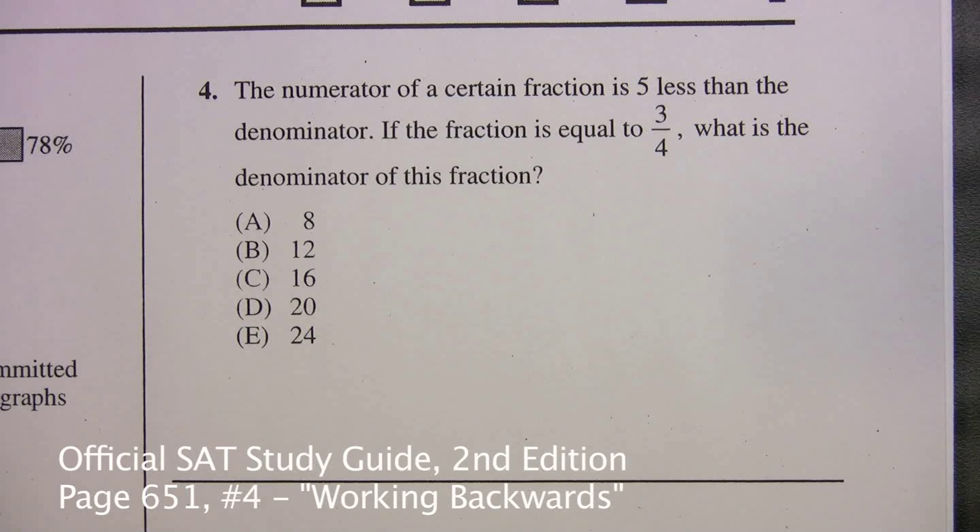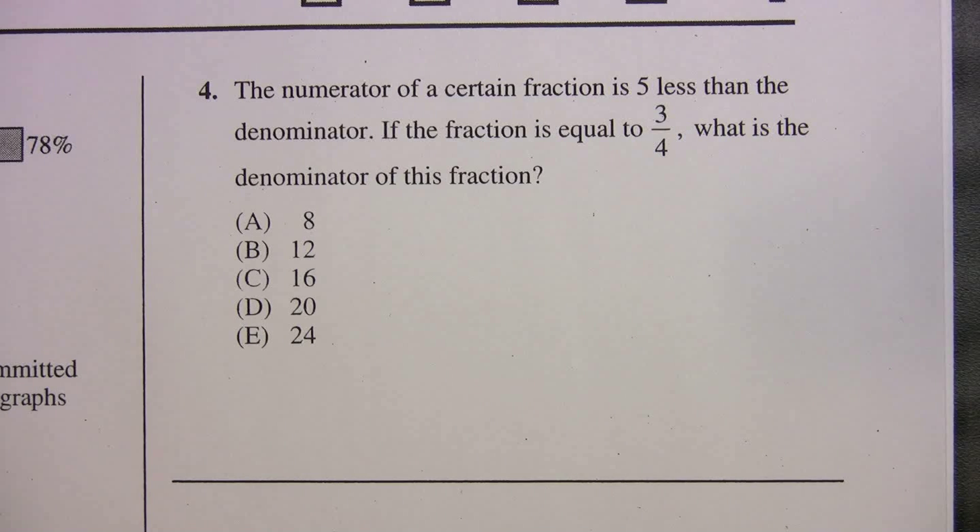Another great strategy to use on test day is working backwards. We're on page 651, this is number 4, and I chose this problem because it really is a prime example of when this strategy works well. It says the numerator of a certain fraction is 5 less than the denominator. If the fraction is equal to 3 fourths, what is the denominator of this fraction?